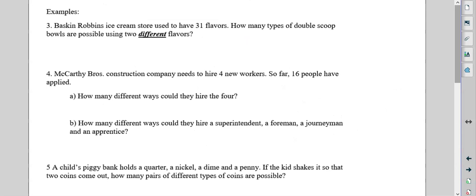All right. Baskin-Robbins used to have 31 flavors. How many types of double scoop bowls are possible using two different flavors? Well, order doesn't matter because you're just going to have two scoops side by side in a bowl. It doesn't matter what order they scoop it in. So that is 31 NCR 2, and that ends up being 465.